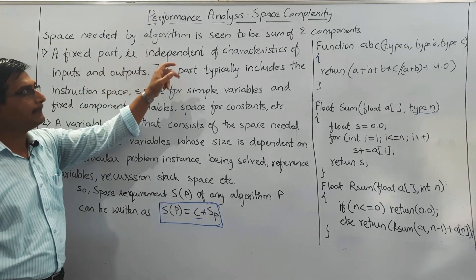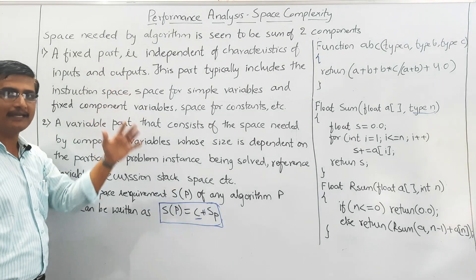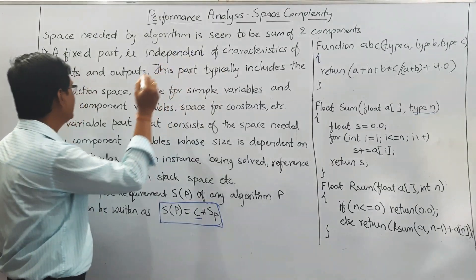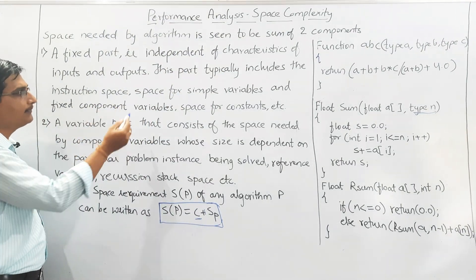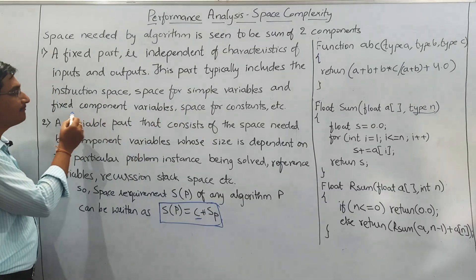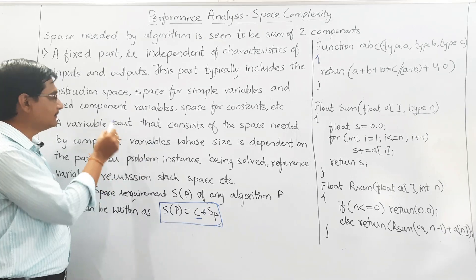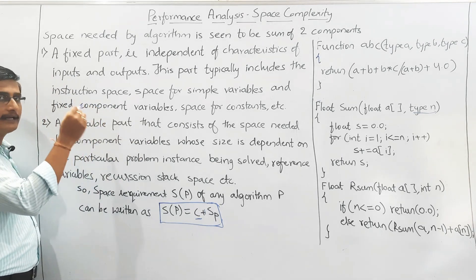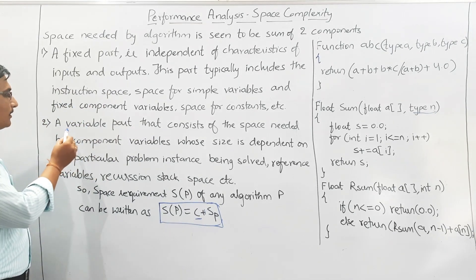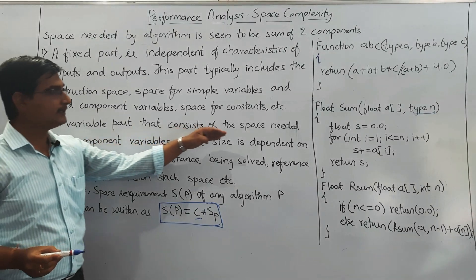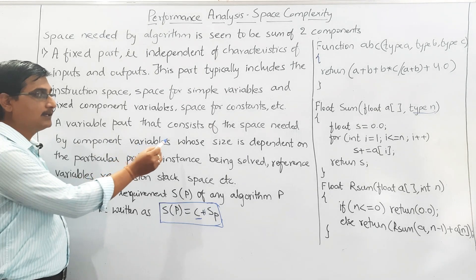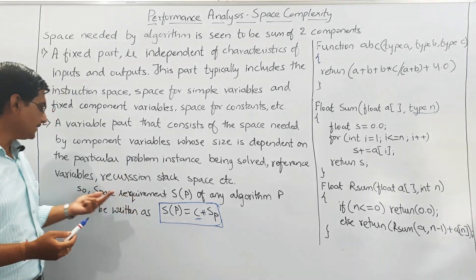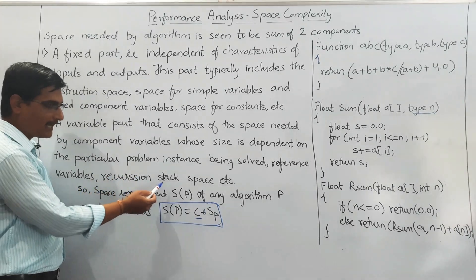The fixed part is independent of the characteristics of input and output — it does not depend on input and output. This part typically includes instruction space, the number of instructions in the algorithm, space for simple variables and fixed-size component variables, and space for constants. The second part is the variable part, which consists of the space needed by component variables whose size is dependent on the particular problem instance being solved, as well as reference variables and recursion stack space.